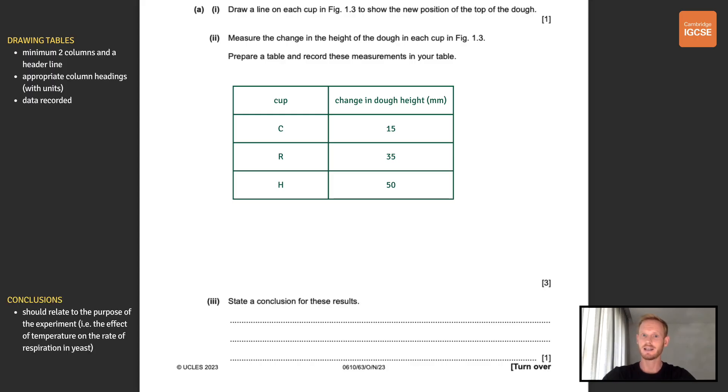Next, measure the change in the height of the dough in each cup in figure 1.3, which can just be done with a ruler, and then prepare a table and record these measurements in your table. So we're going to get one mark for drawing a table with two columns and a headline, one for adding appropriate column headings with units if applicable, and then one mark for actually recording your measurements. Next, you need to state a conclusion for these results. At higher temperatures the dough rose more, which means more carbon dioxide was being produced. So we can conclude that as temperature increases, the rate of respiration increases.